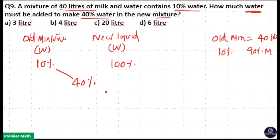So use the allegation: 40 minus 10 is equal to 30. 100 minus 40 is equal to 60. So 60 is to 30 means 30 into 2 is equal to 60. So 2 is to 1 is your ratio of old mixture to new liquid.